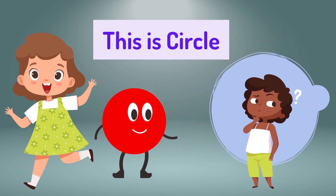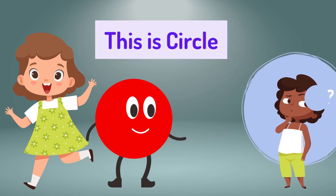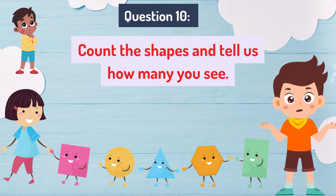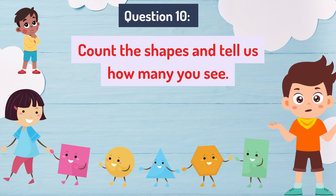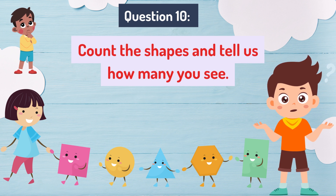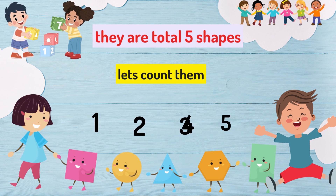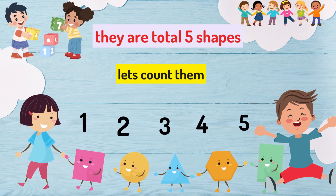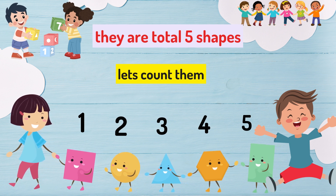This is a circle. Let's move to question 10. Count the shapes and tell us how many you see. Start counting — there are five shapes in total. Let's count them from left to right: one, two, three, four and five.